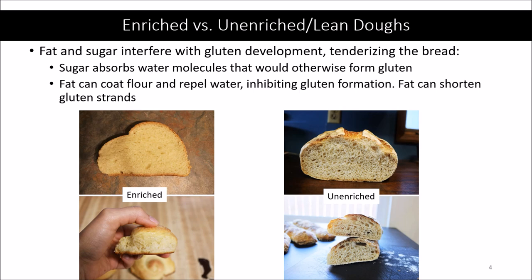Fat influences gluten development differently because, unlike sugar, fat repels water — it is hydrophobic. Consider a buttermilk biscuit dough or pie crust: one of the first steps is cutting or blending the butter into the flour. When you blend the fat into the flour, it coats the flour particles, so when you add liquid later, the water-repelling fat prevents water from entering and coating the flour, which prevents glutenin and gliadin from forming gluten. Additionally, fat can bind to gluten that does form, making it harder for gluten to form longer strands — resulting in a more cake-like bread.